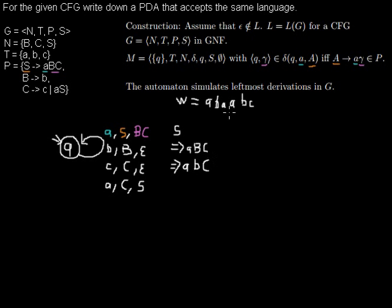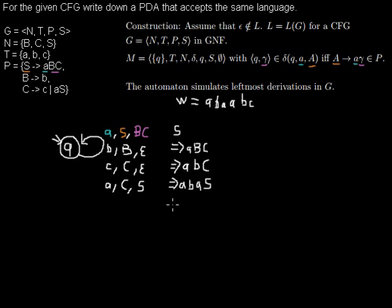Now to get the longer word I have to exchange C by a rule that gives me more opportunities. So I exchange C by A, S. Now I have to take this rule again, then I exchange S by A, B, C.